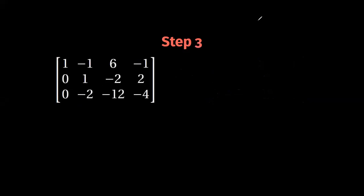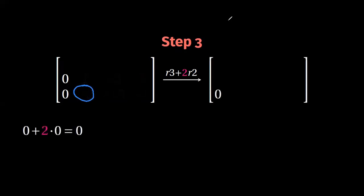So we start from the previous matrix that we just obtained. And we now do the following operation, row three plus two times row two. This will eliminate the element minus two that you can see here. Then let's work step by step.